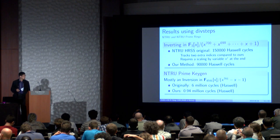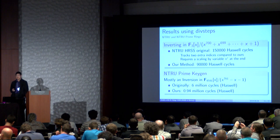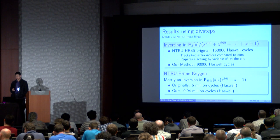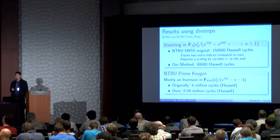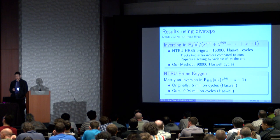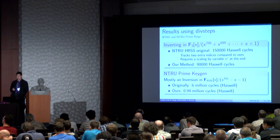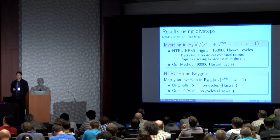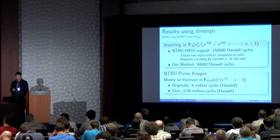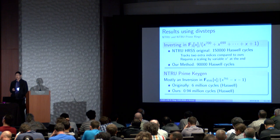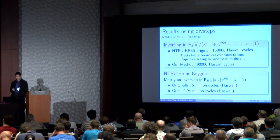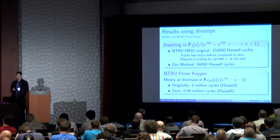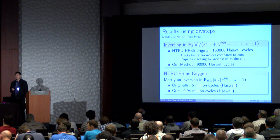We can look also at NTRU prime key generation, which is mostly an inversion in F of 4591 of X over X to the 761 minus X minus 1. There is also an inversion in F3 of X over X to the 761 minus X minus 1. And originally, this takes 6 million cycles in the NTRU prime code. And if we use our code, it takes less than 1 million, 0.94 million cycles on the Haswell, to be exact. So that's divsteps. And this is still an n squared algorithm.